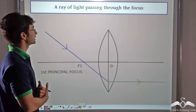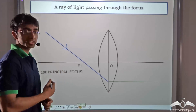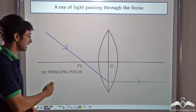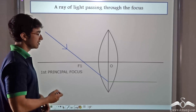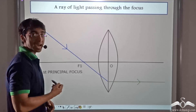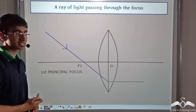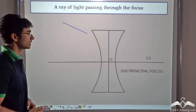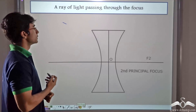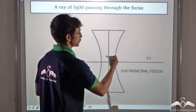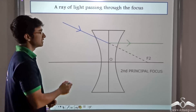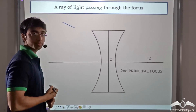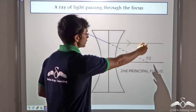Let us consider the second ray — a ray of light passing through the focus. In the case of a convex lens, a ray passing through F1, the first principal focus, after refraction travels parallel to the principal axis. Similarly for a concave lens, a ray incident in such a way that it appears to meet F2 — after refraction from the concave lens — will pass parallel to the principal axis.